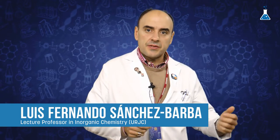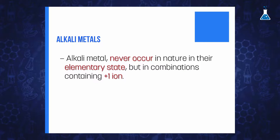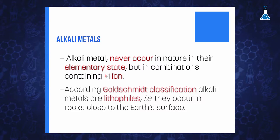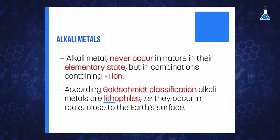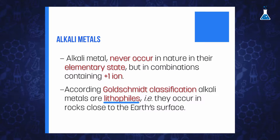We have discussed in the last video the high reactivity of the alkaline metals, which explains that they never occur in nature in their elementary state but in combinations containing the plus-one ion. According to the Goldschmidt classification, alkaline metals are lithophiles, so they occur in rocks that remain close to the Earth's surface.